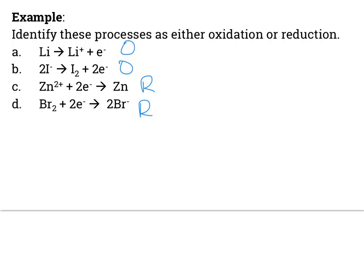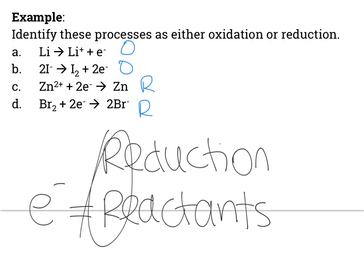Here's a hint. In reduction, your electrons are reactants. Notice they both start with an R. Okay. Reduction, the electrons are reactants because we're gaining electrons. Okay. Oxidation, they're products because we're losing electrons. That finishes oxidation reduction. Thanks for watching.